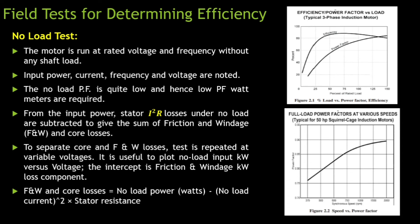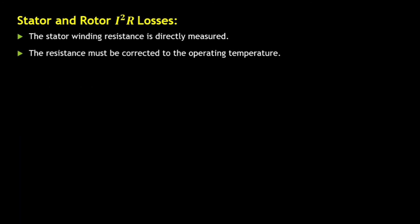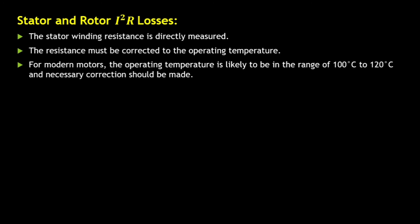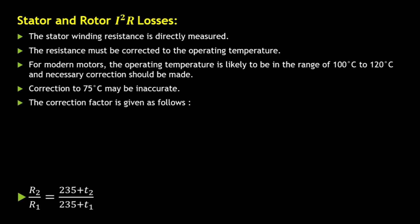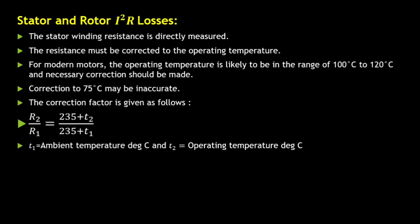The stator and rotor I²R losses: the stator winding resistance can be directly measured. Here resistance value also has correction because of the temperature, because we know that Ohm's law is followed only when the temperature is kept constant. It varies with the temperature; resistance is temperature sensitive, so we need to add that corrections also. For modern motors the operating temperature is likely to be in the range of 100 degree centigrade to 120 degree centigrade, and necessary correction should be made. So correction factor is given as R2 upon R1 equals 235 plus T2 upon 235 plus T1, where T1 is the ambient temperature in degree centigrade and T2 is the operating temperature in degree centigrade.